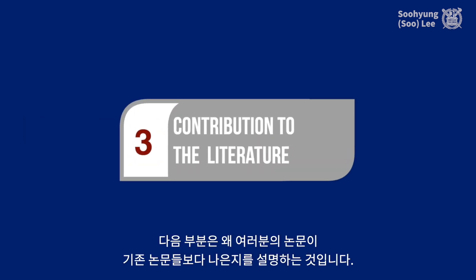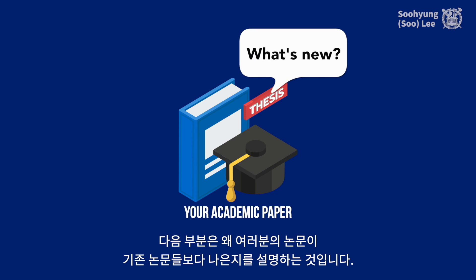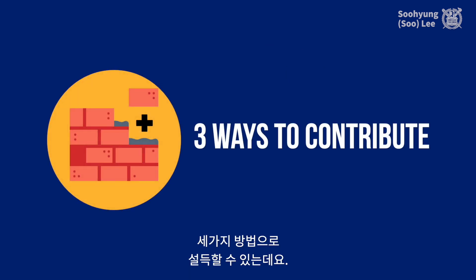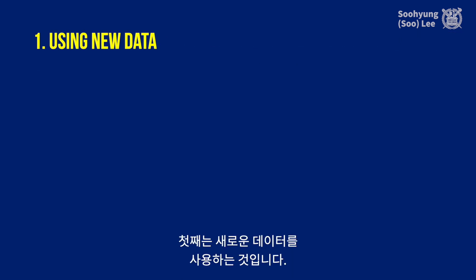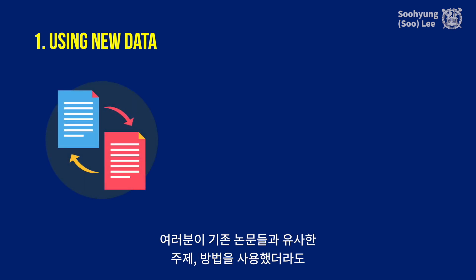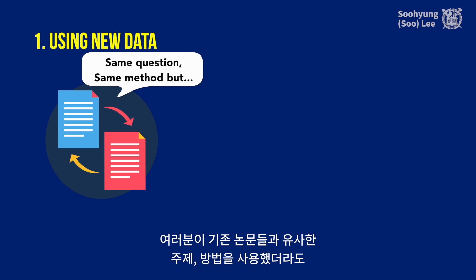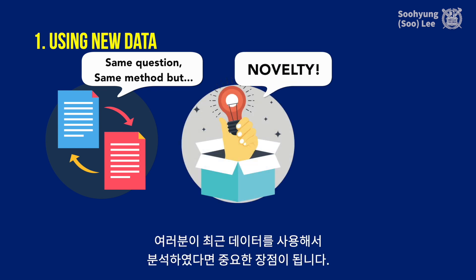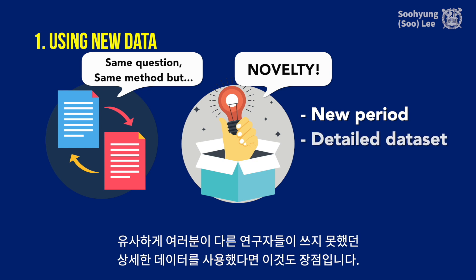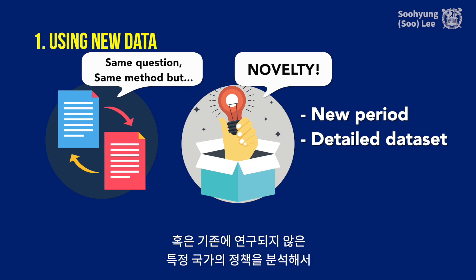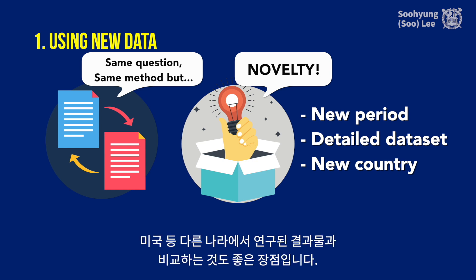Contribution to the literature simply means what is new in your paper compared to existing studies related to your research topic. There are three ways you can establish your contribution. The first is using new data. For example, you may have a research question and method that are the same as those other studies have used. However, you can still claim novelty if you analyze a more recent period while all other studies were done long ago. You can also claim contribution if you use a more detailed dataset that has not been available to other researchers, or use a dataset from a country that has not been studied before to see if findings from the U.S., for example, apply to that country.